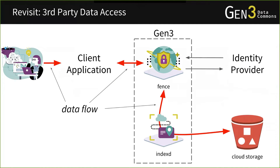Revisiting the data access flow: once we've authenticated the user, we want to return data for them — this is where IndexD comes in. A client makes a request to Fence to access some data. Fence uses IndexD to look up the data and retrieve it from storage. For example, if we're using S3 on AWS, the client makes a request to Fence, Fence looks up the storage URL using IndexD, and generates a pre-signed URL that the client can use for download.